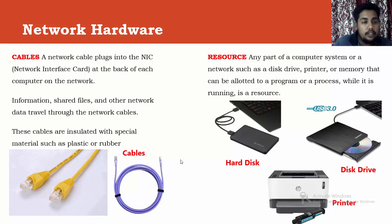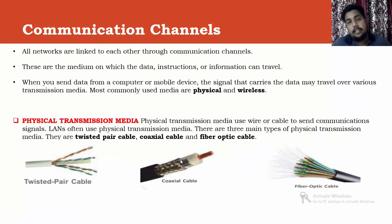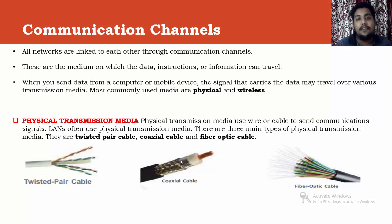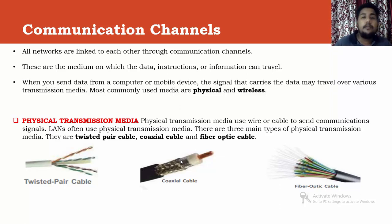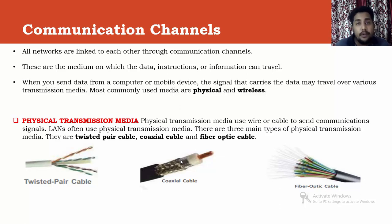Moving to the next topic: communication channels. We have already discussed communication channels through which we send data from one part to another. This can be done with two possibilities: physical and wireless. Physical means physical transmission media — through wires or cables. There are three types of cables: twisted pair cable, coaxial cable, and fiber optic cable.